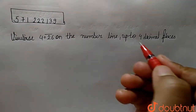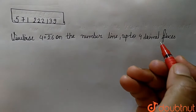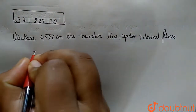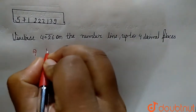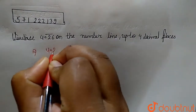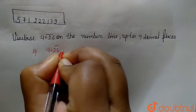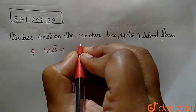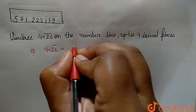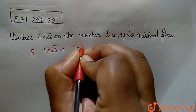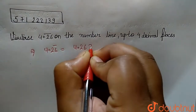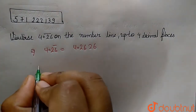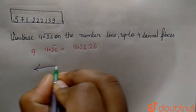The question here is: visualize 4.26 bar on a number line up to 4 decimal places. So we can visualize 4.26 bar up to 4 decimal places — that means 4.2626.